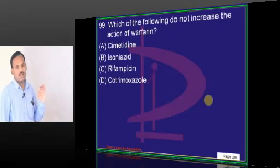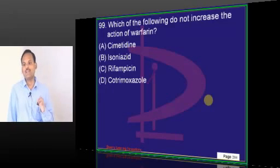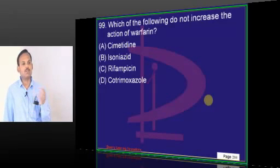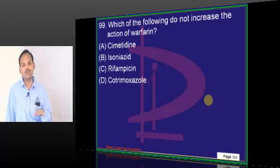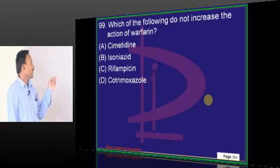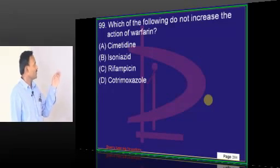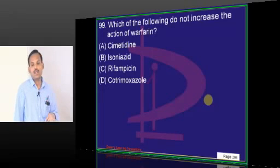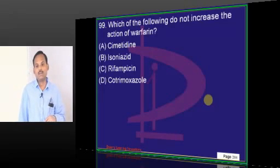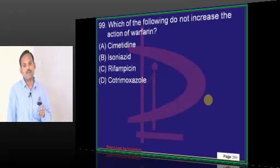Now consider these drugs: cimetidine is known as an inhibitor of CYP enzymes — it will inhibit multiple CYP enzymes including CYP2C9. Isoniazid, rifampicin, cotrimoxazole — out of these, isoniazid and cotrimoxazole also to some extent inhibit CYP2C9.